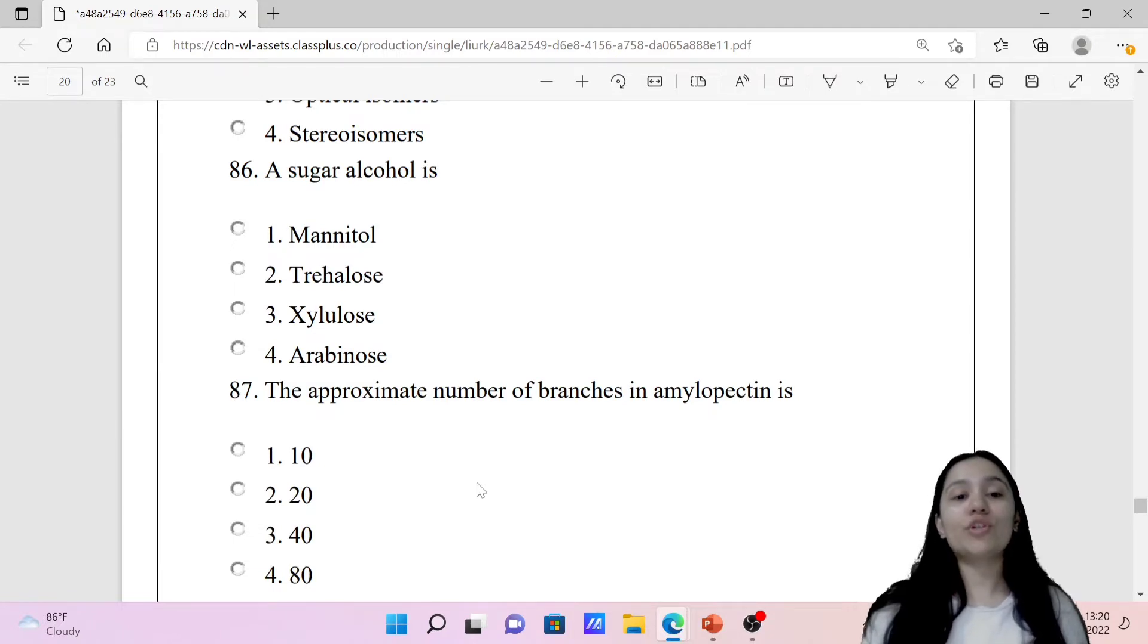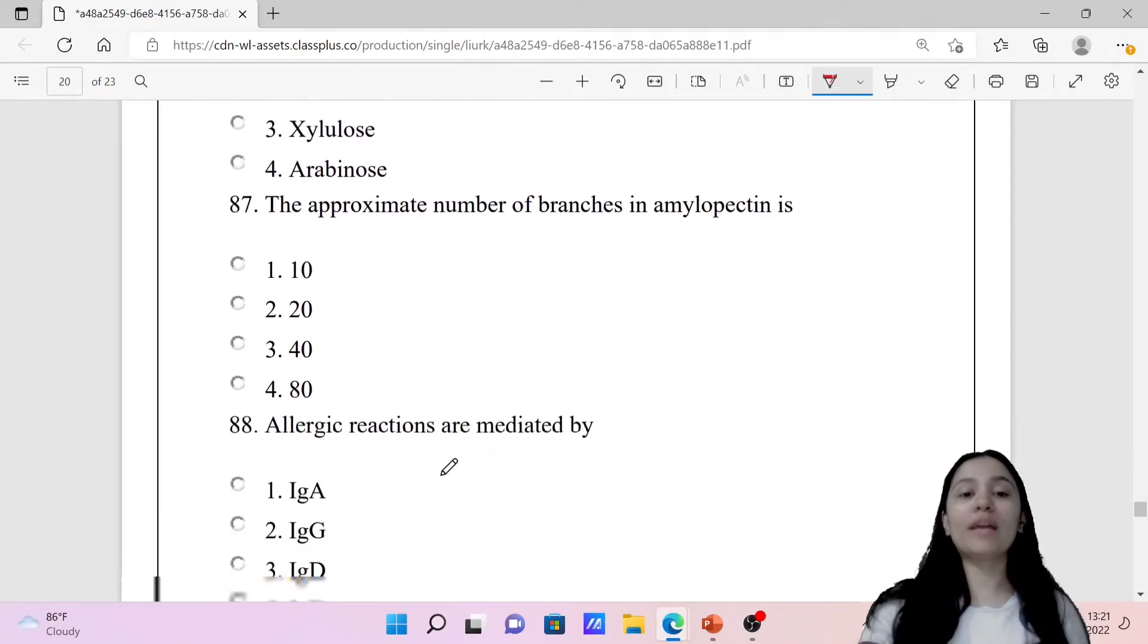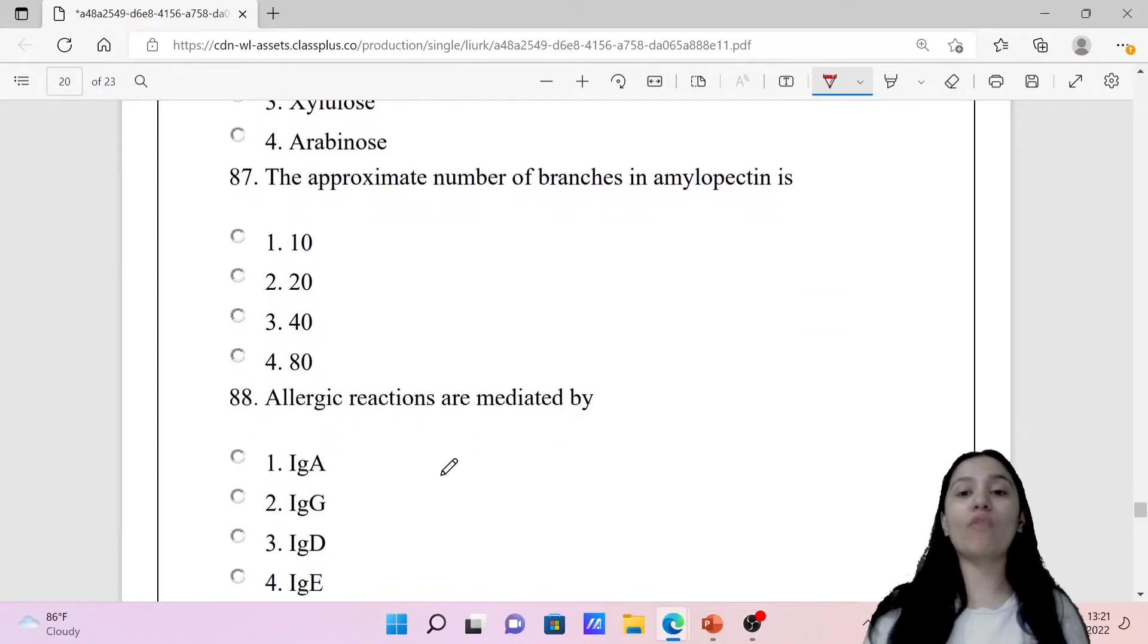Question 86: A sugar alcohol is mannitol, trehalose, xylulose, or arabinose. The correct answer is option first, mannitol. We have already discussed this in our videos. Question 87: The approximate number of branches in amylopectin. The correct answer is option fourth, 80 branches.